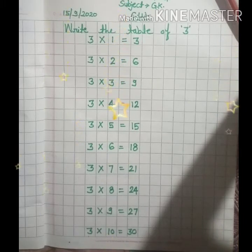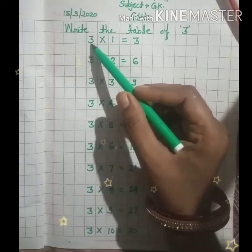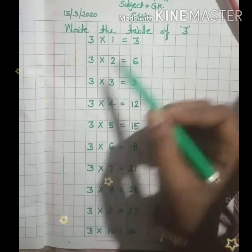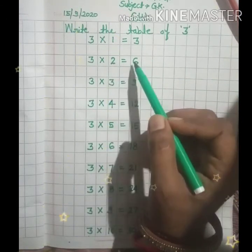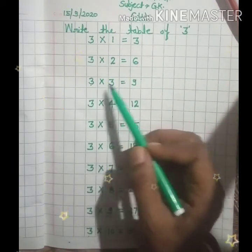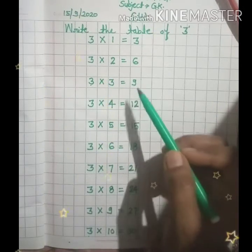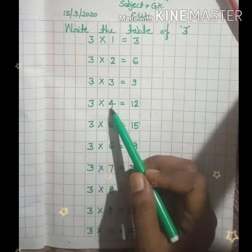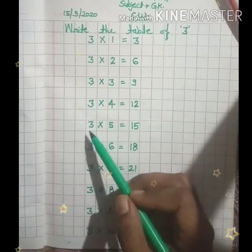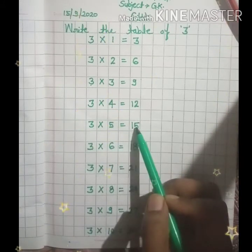Let's write one time again. 3-1-3, 3-2-6, 3-3-9, 3-4-12, 3-5-15.